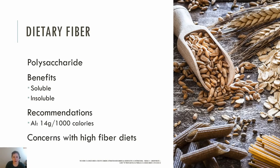Fiber is the last example of a polysaccharide we're going to cover. Fiber is largely indigestible and will pass into the large intestine, where bacteria metabolize and form short-chain fatty acids and gas. Short-chain fatty acids provide fuel for cells in the large intestine. Fiber is indigestible because we lack the enzymes to break it down. Total fiber includes dietary fiber that occurs naturally in plants, and functional fiber, which includes isolated or synthetic fibers that may be added to foods or used as a supplement.